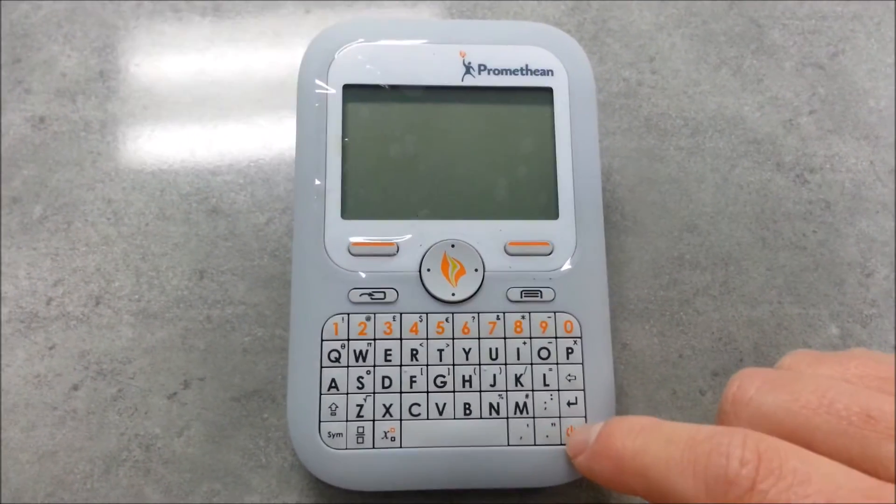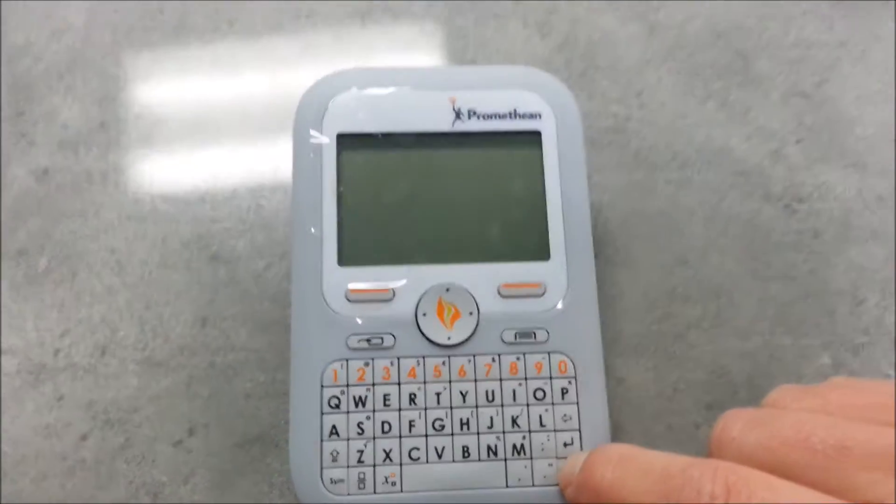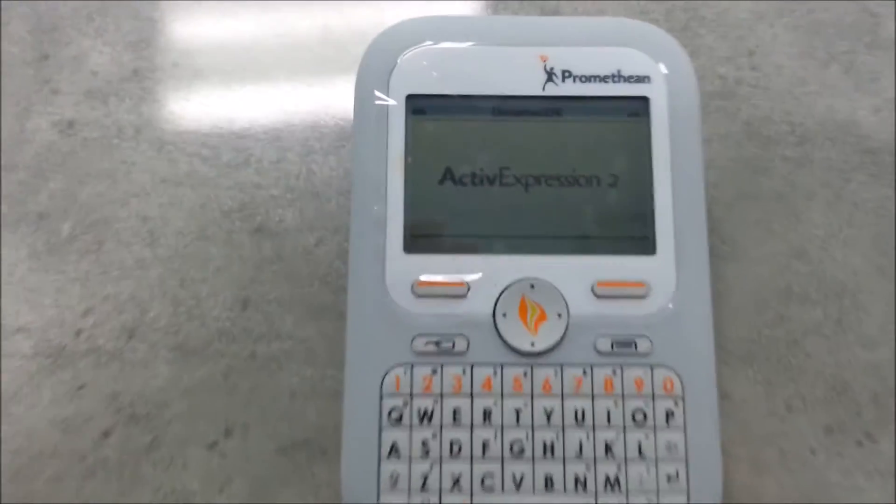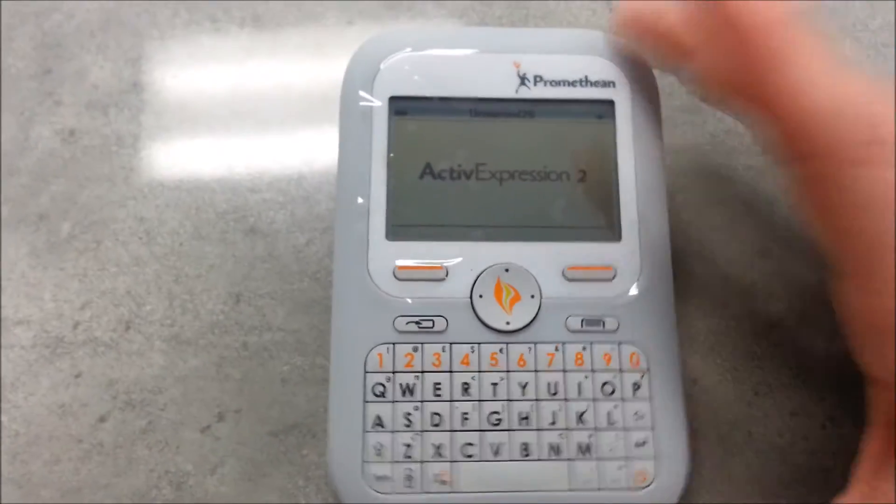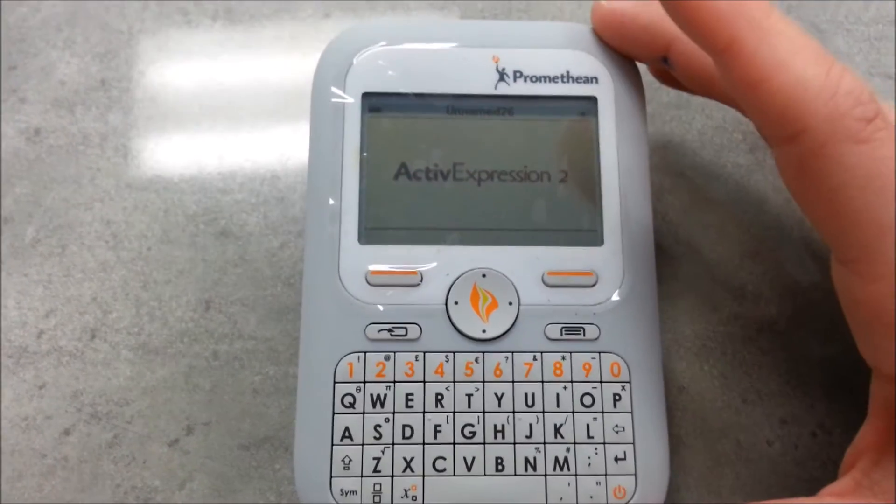To start with, the power button's right here. You just long press that and it's going to turn on. You will see it says unnamed 26, so this is clicker 26. That's the first thing you want to do: get the clicker turned on and see if the Promethean board is going to register it.